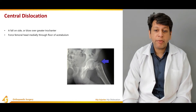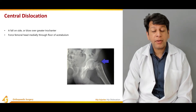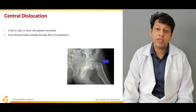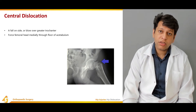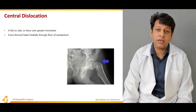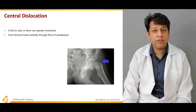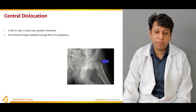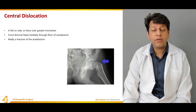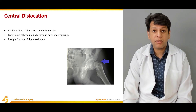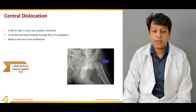In central dislocation, the force drives the femoral head medially through the floor of the acetabulum. Since the floor of the acetabulum is bone, this will result in fracture of the acetabulum, fracture of the femoral head, or both. A fracture of the acetabulum is almost always present in this type of dislocation.